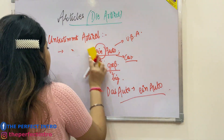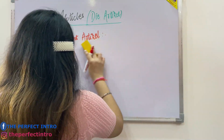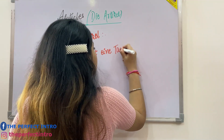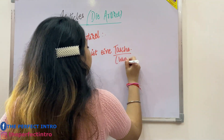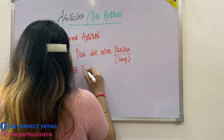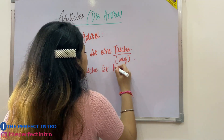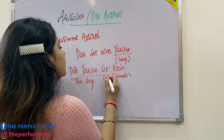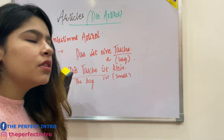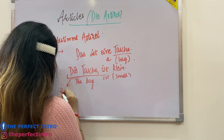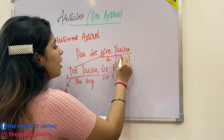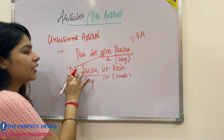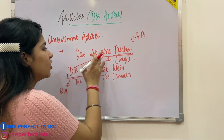Let's take another example. Supposingly I say 'Das ist eine Tasche' — this is a bag. Tasche means bag. Then 'Die Tasche ist klein' — the bag is small. Klein means small. So 'die' is the bestimmt article here, but in the unbestimmt article it changes into 'eine Tasche'. So in unbestimmt articles, 'die' becomes 'eine'.